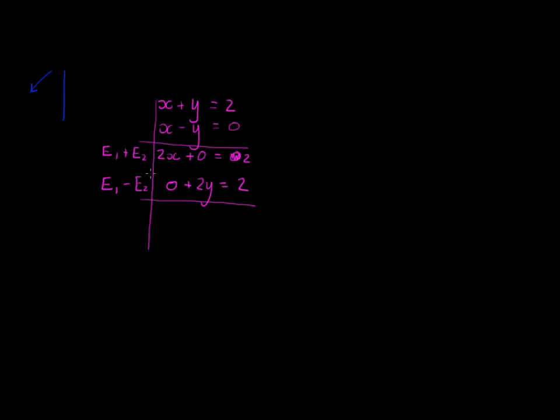The other thing that I'm allowed to do is I'm allowed to multiply an equation with any number. Now I want x on its own, I don't want the 2 in front. So if I multiply equation 1 with a half, I will have a half times 2 gives me 1, so I'll just have x. A half times 0 will remain 0, and a half times 2 will give me 1.